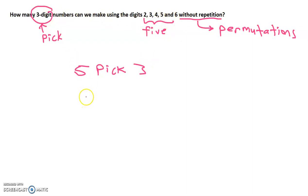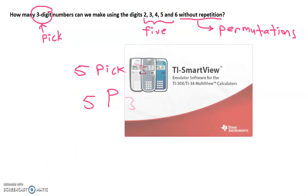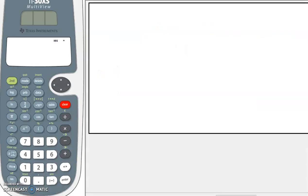And that's really to remind us that when we choose our permutation functions, it will be five permutation three. And this is a function that you will find on your calculator. So here's how you would type this into your calculator.